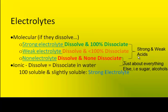A weak electrolyte is a molecule or a weak acid that does not dissociate 100% when placed in water. In other words, if there's a thousand weak acid molecules placed in water, maybe two or three of them will dissociate into ions.